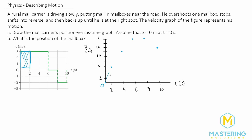You can draw a line to give you a better visual representation of what's happening. This is Part A — going from the velocity versus time graph to the position versus time graph. Now for Part B, they want us to find what the position of the mailbox is.